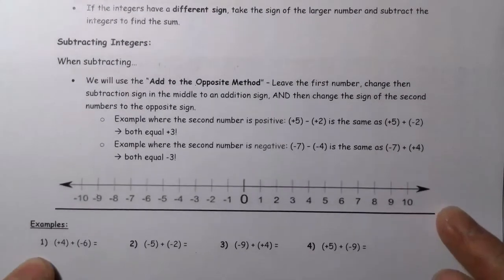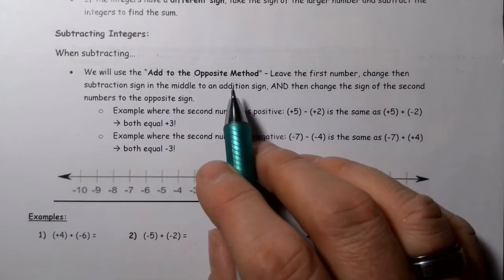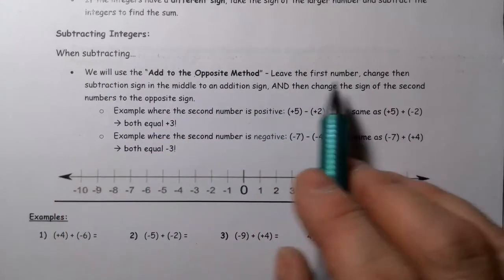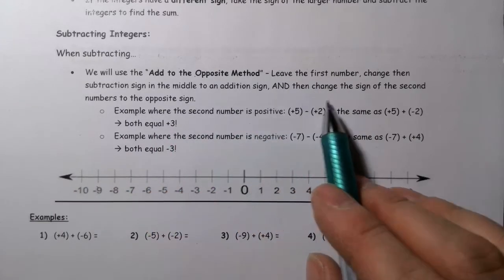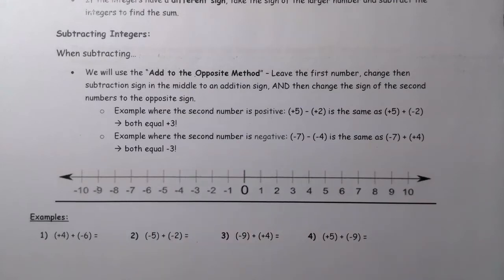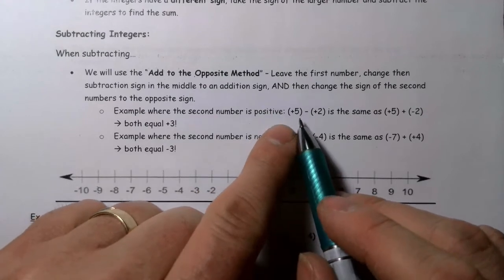When you're subtracting, you're going to use the 'add the opposite' method. You leave the first number, change the subtraction sign in the middle to an addition sign, and then change the sign of the second number to the opposite sign. That sounds a little confusing, so there are a couple of ways we can think about this.